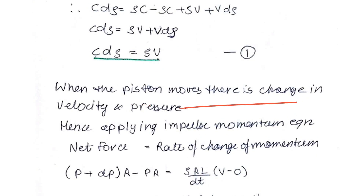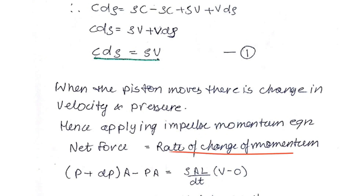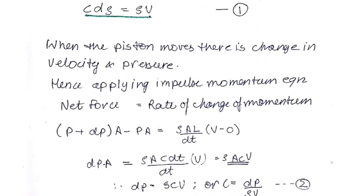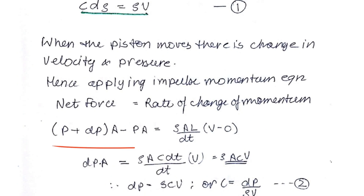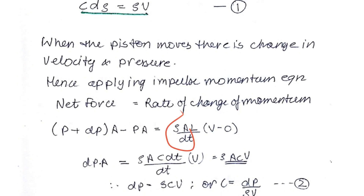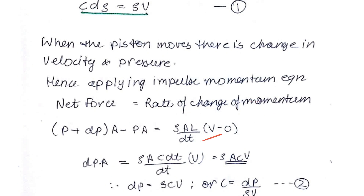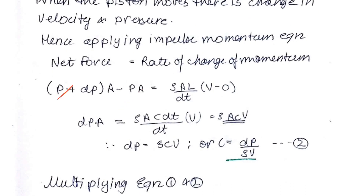When the piston moves, there is a change in velocity and pressure, so we apply the impulse-momentum equation: net force equals the rate of change of momentum. The net force is the difference in pressure (p + dp) minus p, times area A. The rate of change of momentum equals the mass flow rate times the change in velocity. Initially the piston is stationary so V1 = 0, and after moving it has velocity v, giving (v − 0). After cancellation, this gives a second relationship for c.